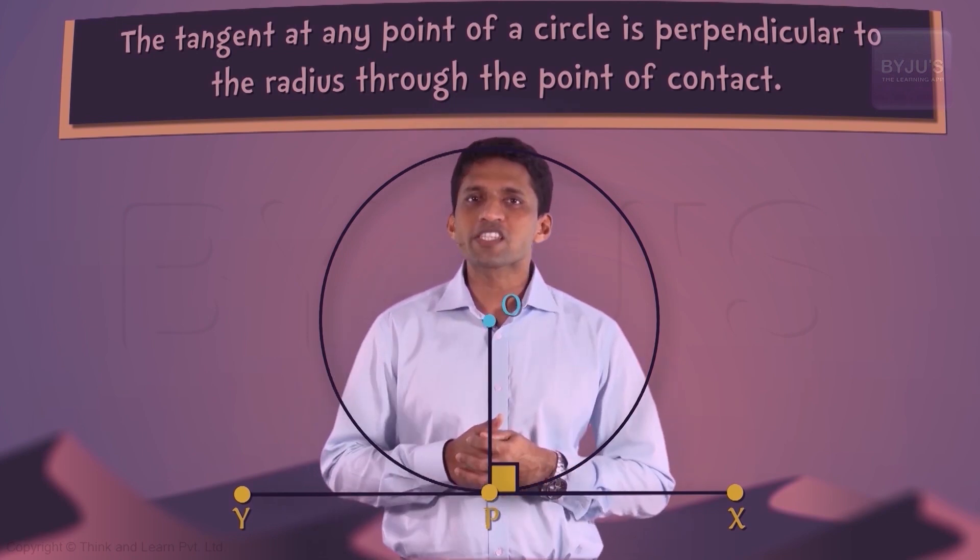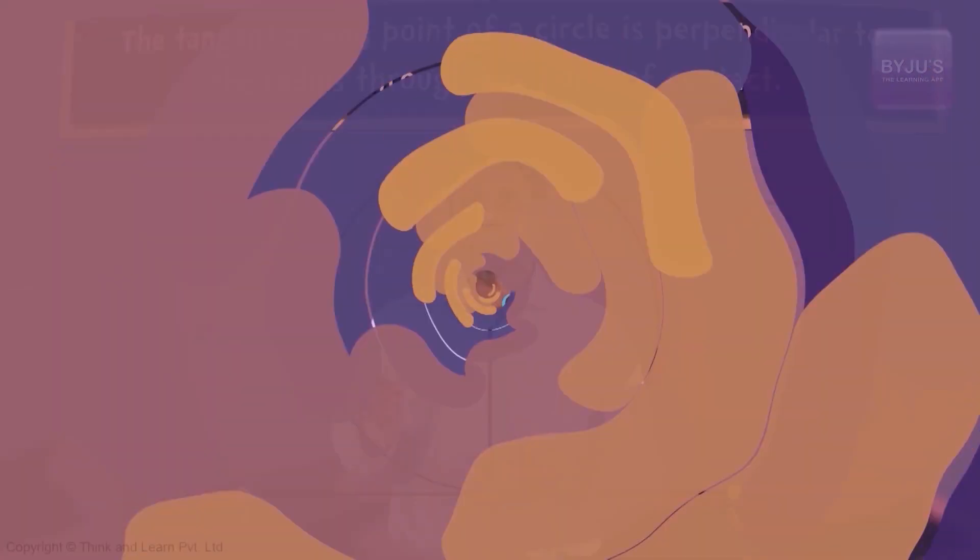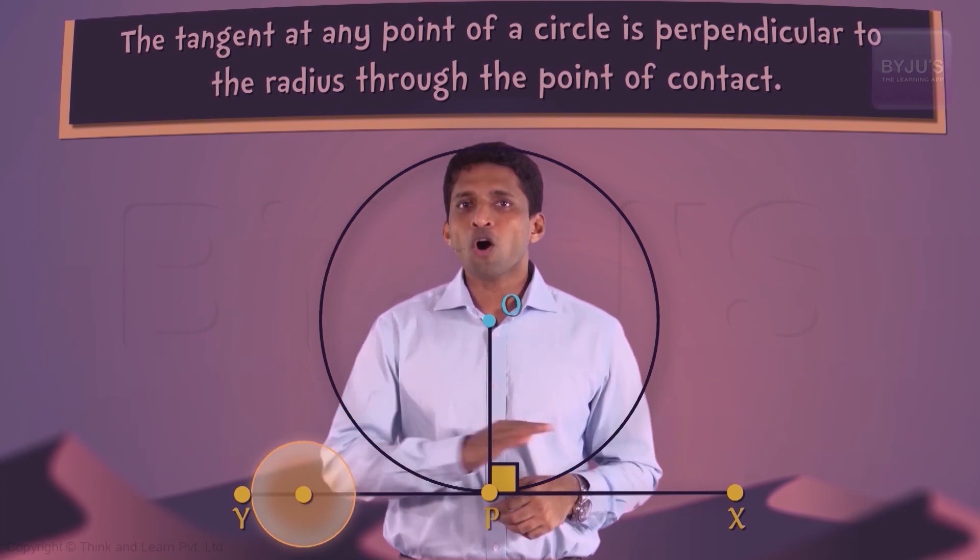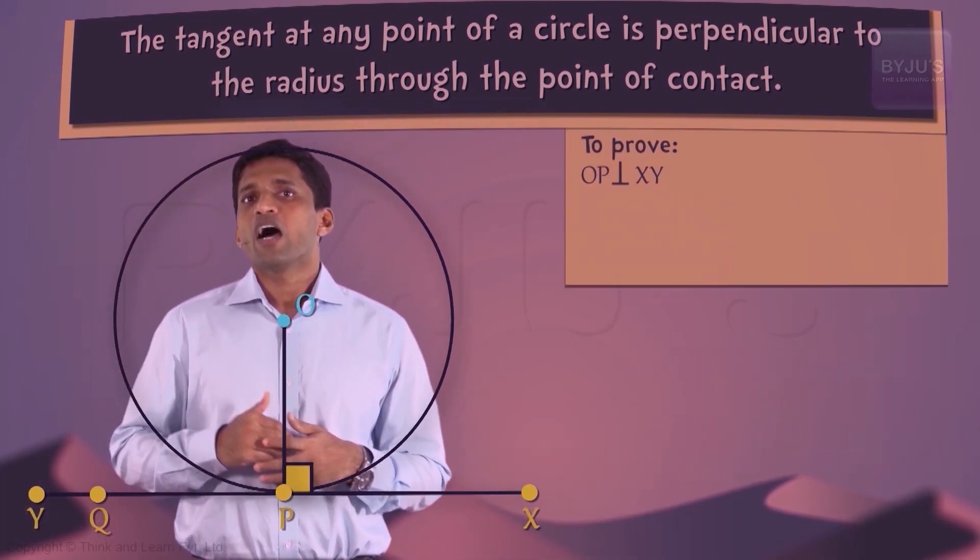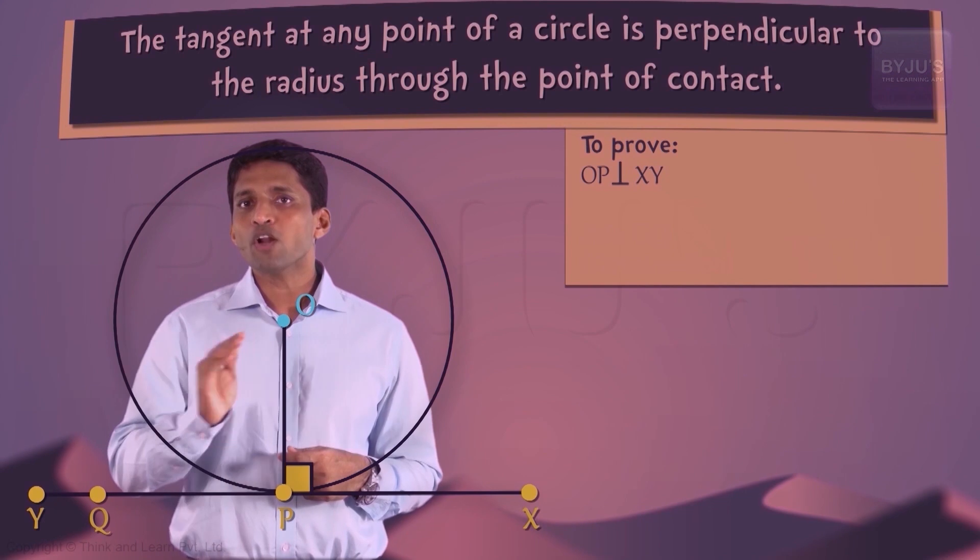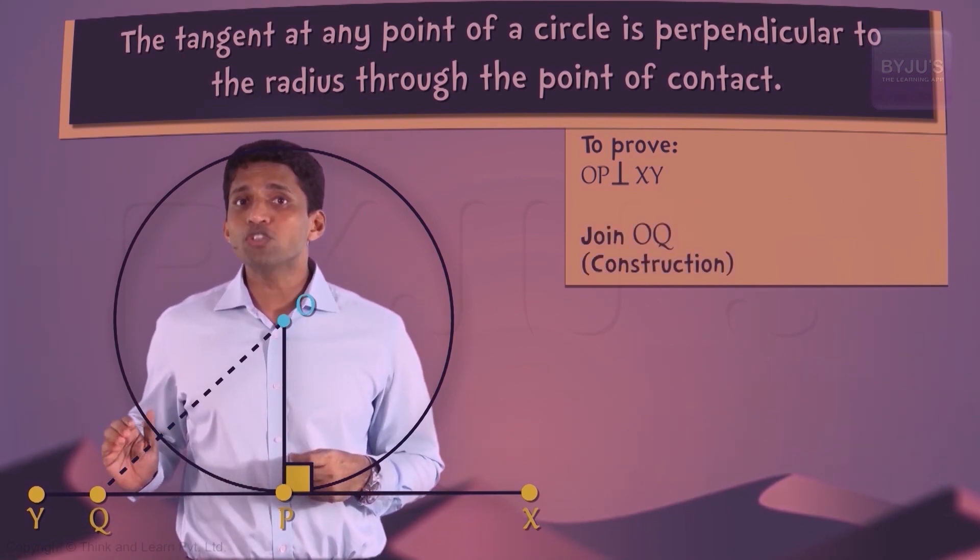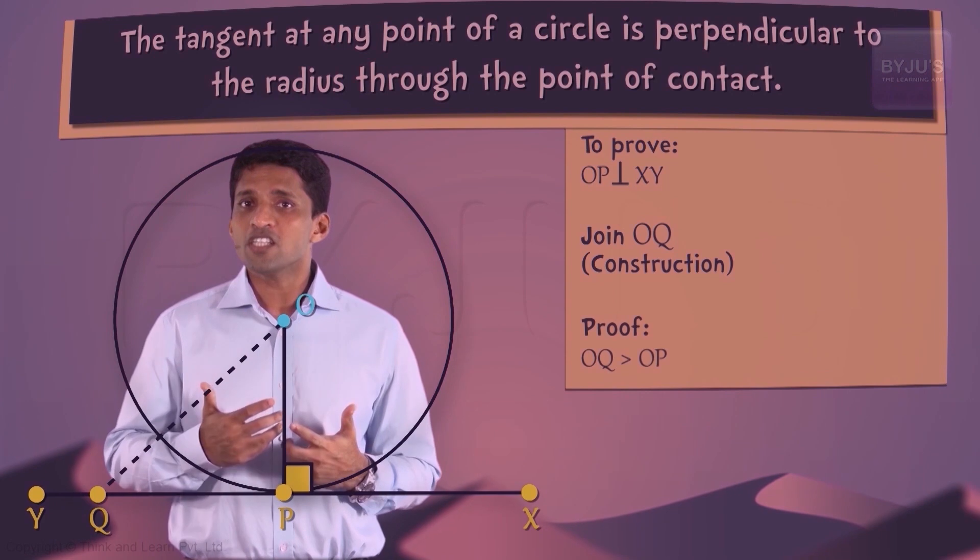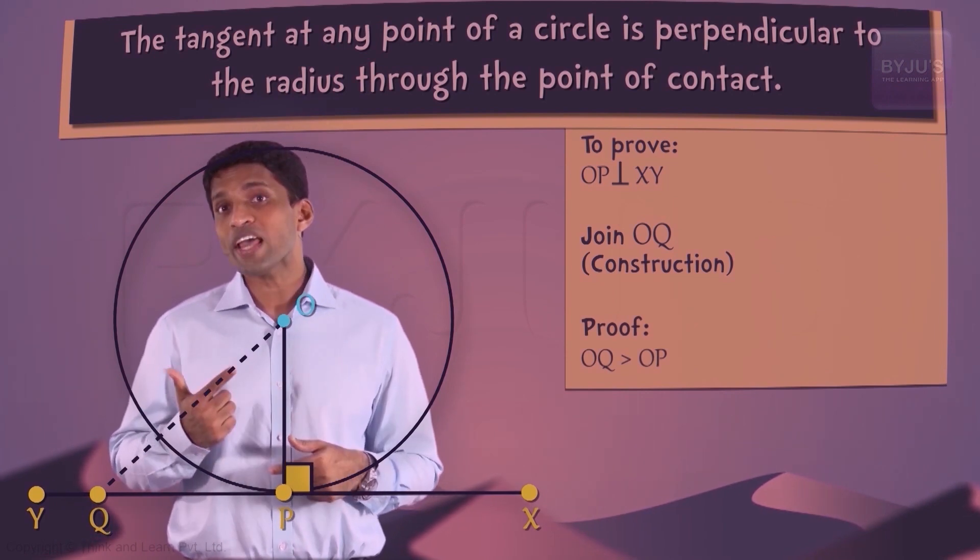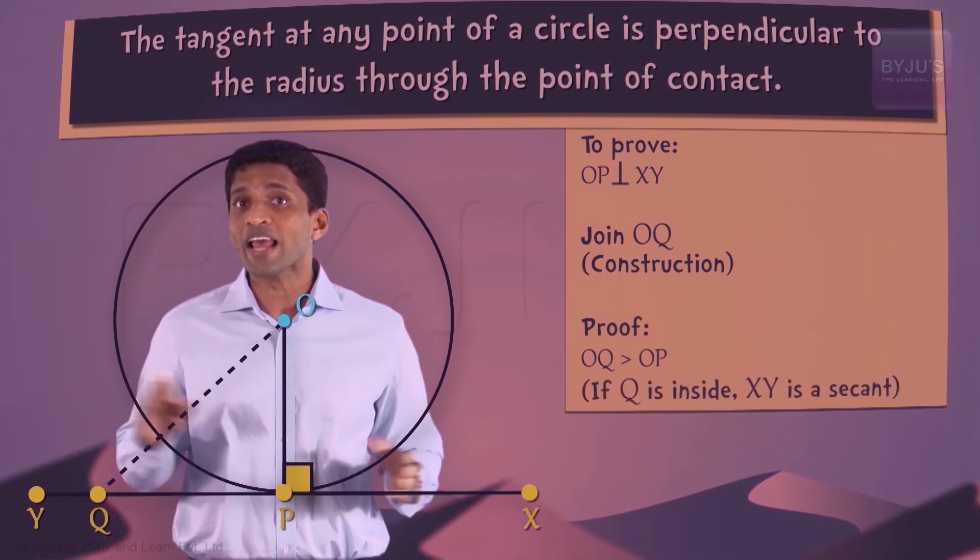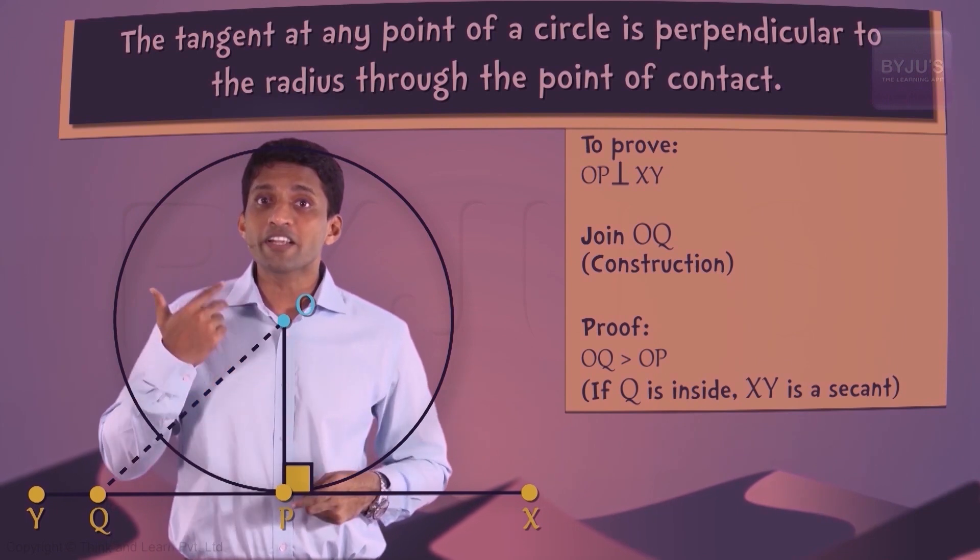Now we can easily prove this theorem. So let's look at the proof. Now take a point Q on the line XY other than P and join OQ. Now point Q must lie outside the circle since if Q is inside then XY will become a secant because that time the line will end up cutting the circle at two points.